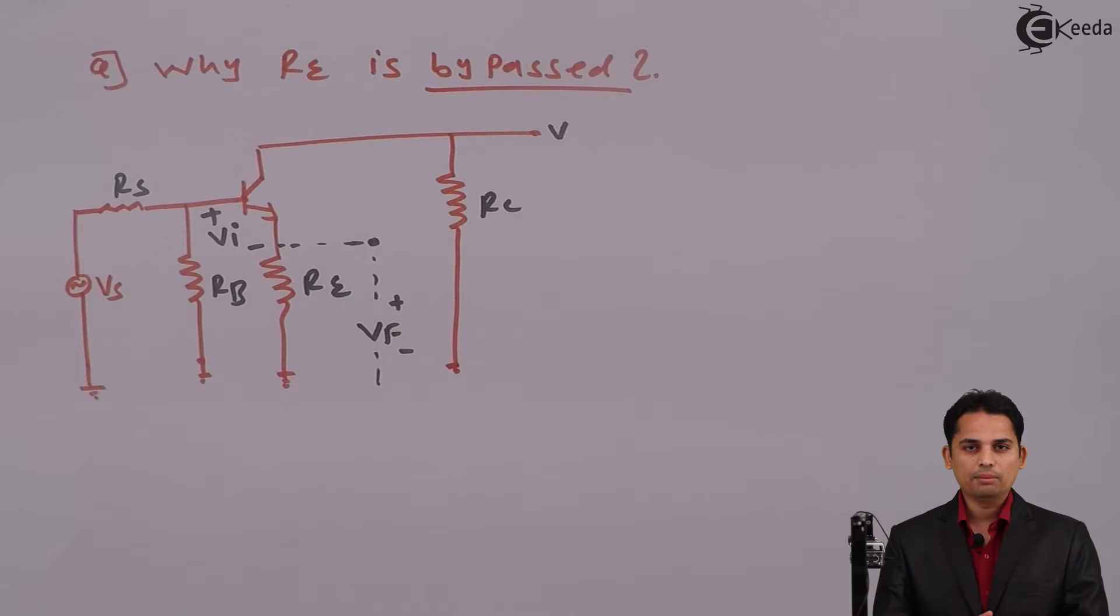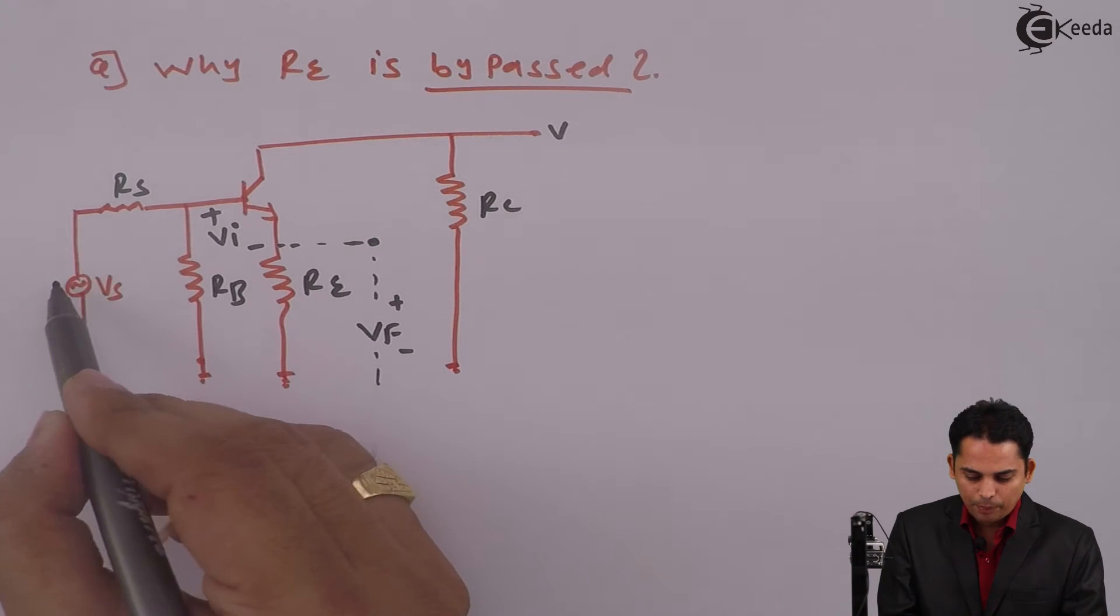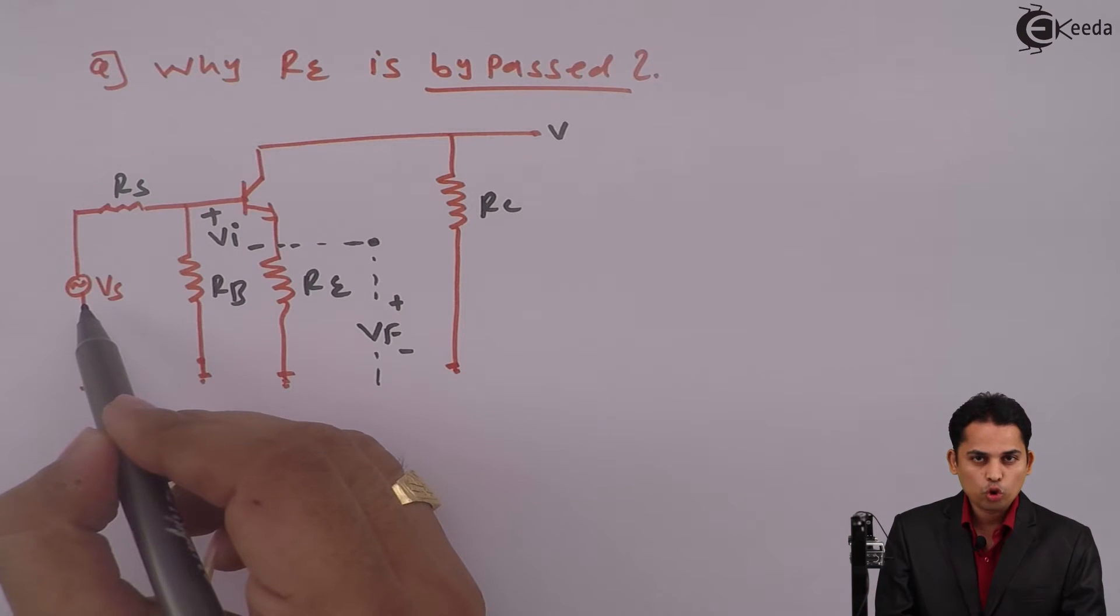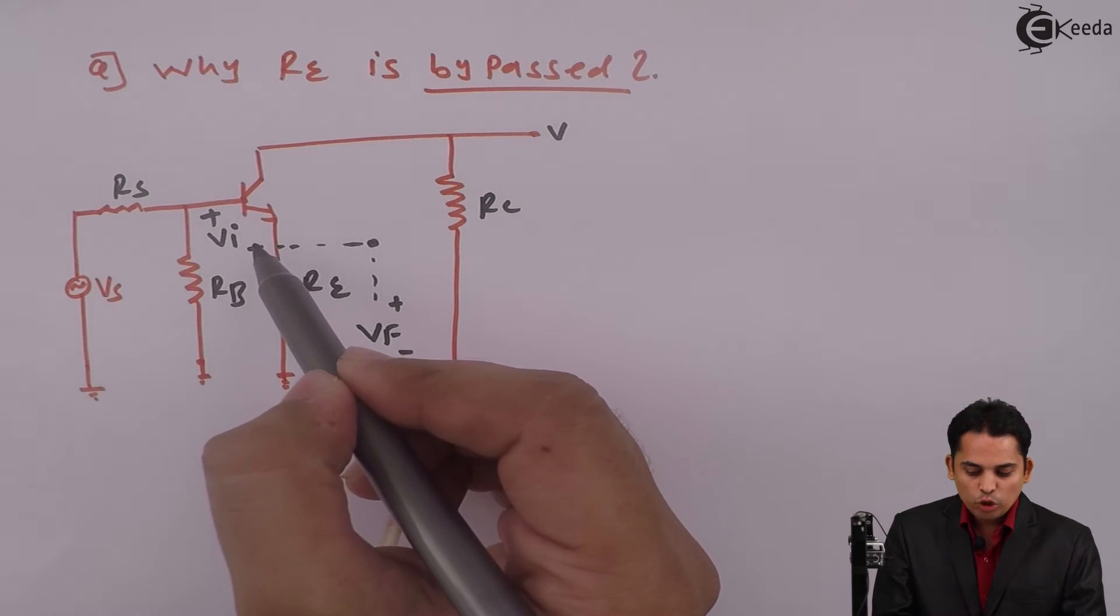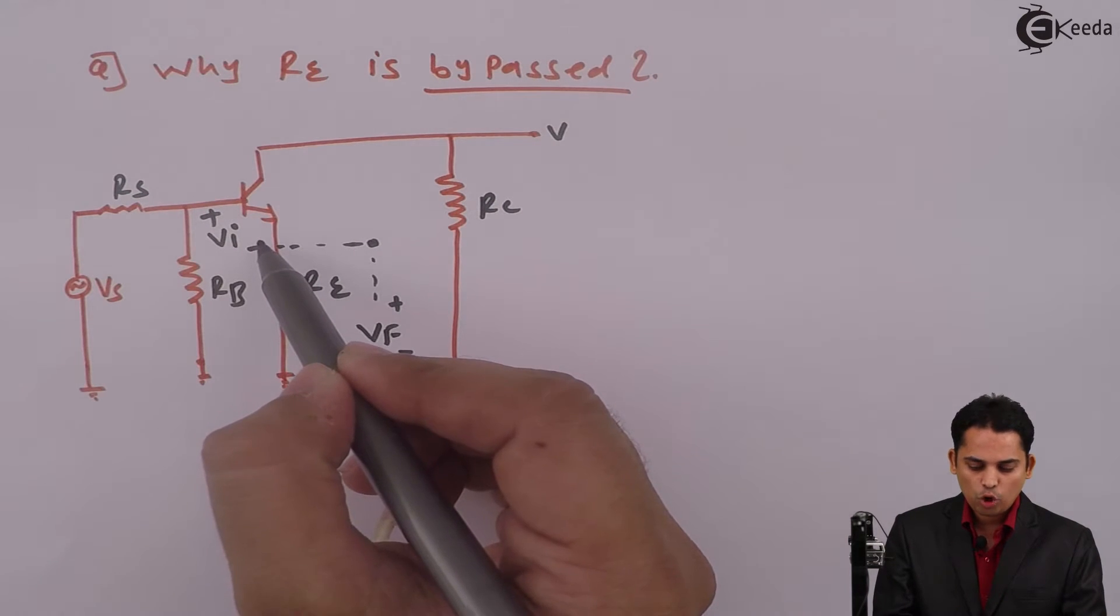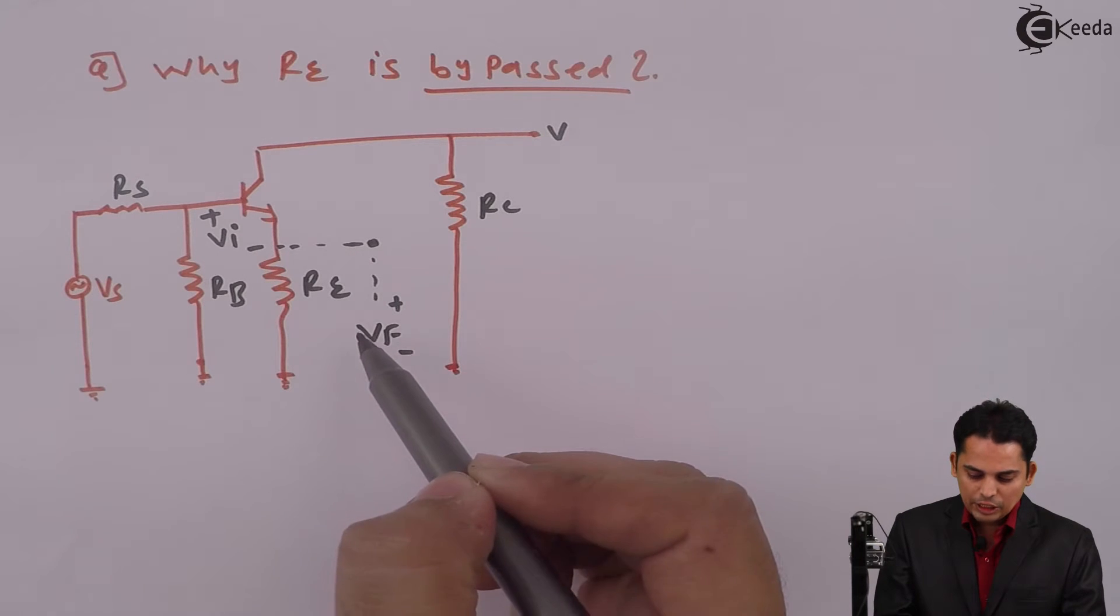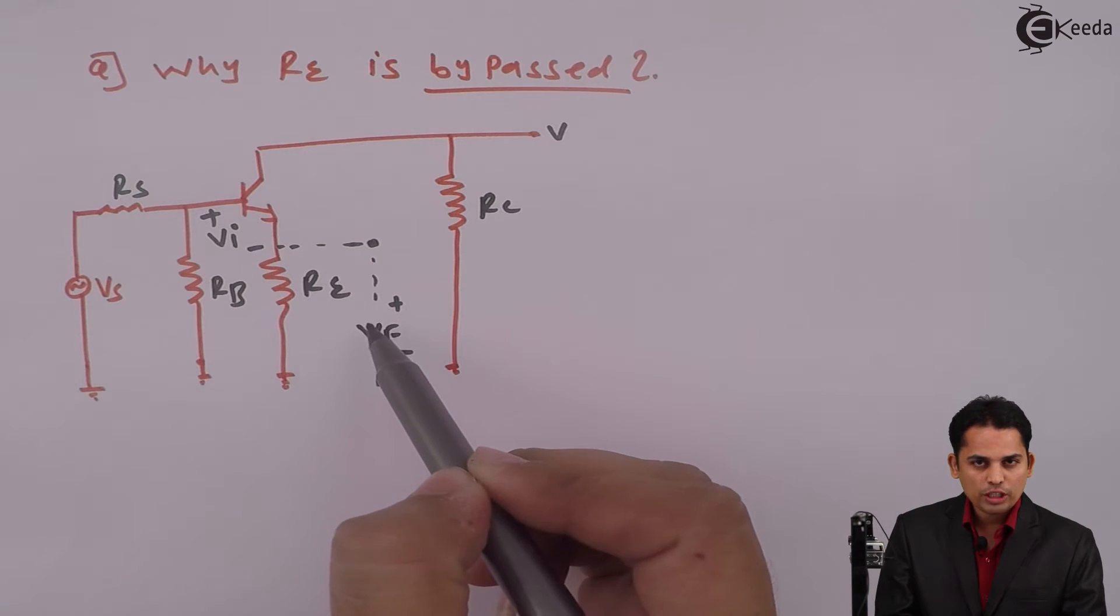This is a circuit diagram of transistor having RE or emitter resistor. What we have done is we have short circuited all DC batteries present in the circuit. The circuit diagram will look like this. This is input AC applied or called as source voltage. This is actual input across transistor called as VI and this is feedback voltage across RE.